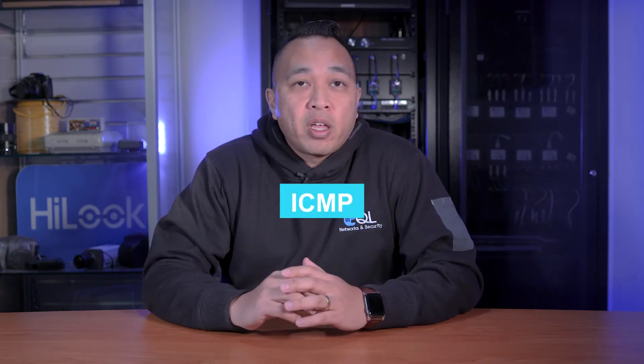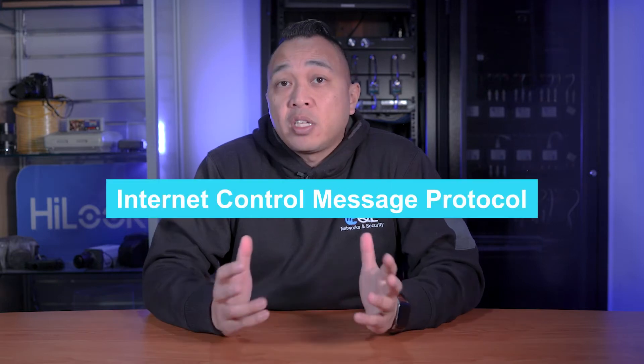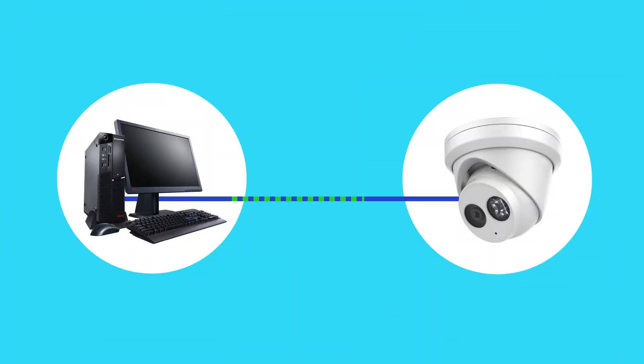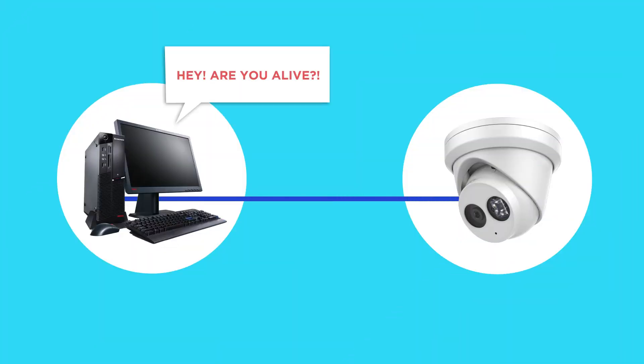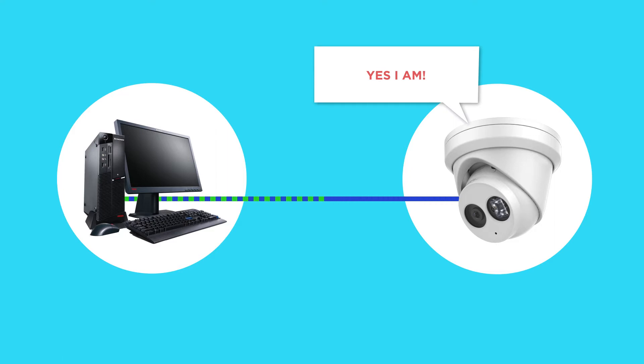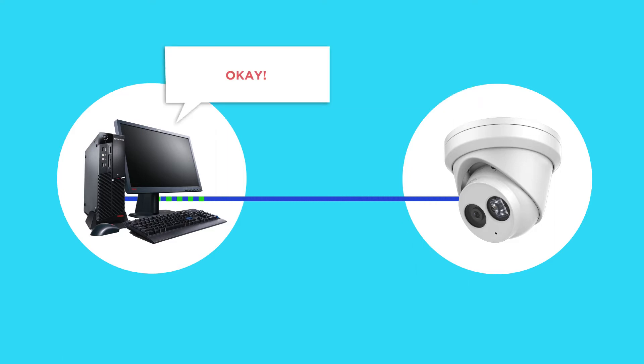The ping command is a command line utility built into your operating system. It operates by sending echo requests and echo reply messages via the ICMP, or Internet Control Message Protocol. Basically, your PC sends a message out to the device and waits to hear back from that device that the message has been received. This is a useful way to troubleshoot devices on the network if for whatever reason they are not functioning properly.